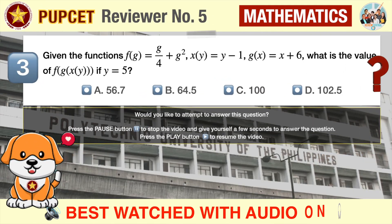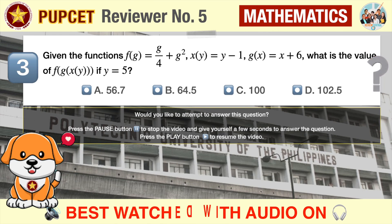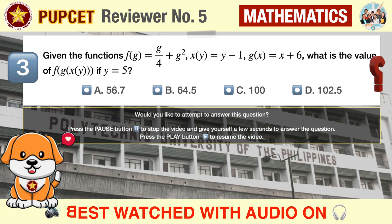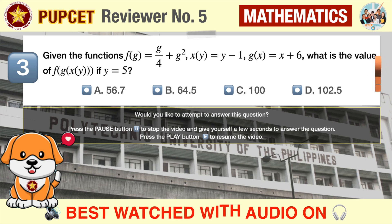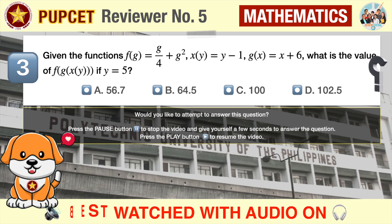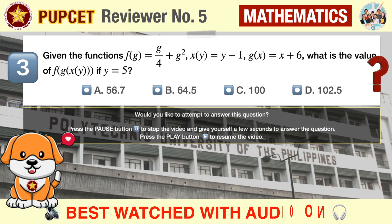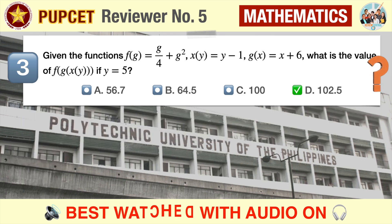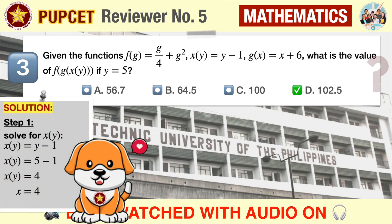Question number three: given the functions f(g) = g/4 + g squared, x(y) = y minus one, and g(x) = x plus six, what is the value of f(g(x(y))) if y equals five? A) 56.7, B) 64.5, C) 100, D) 102.5. The correct answer is D, 102.5. We are dealing here with nested functions.